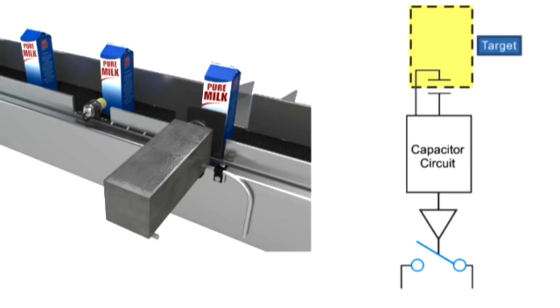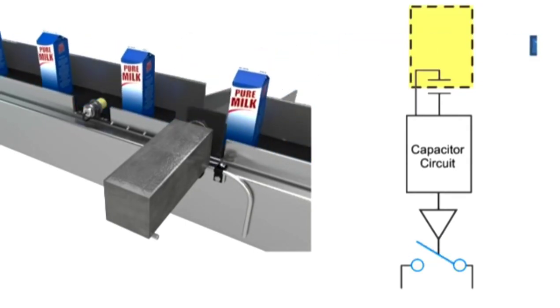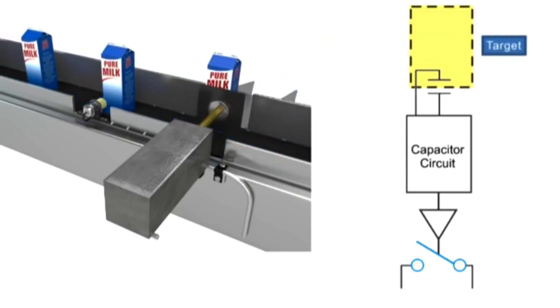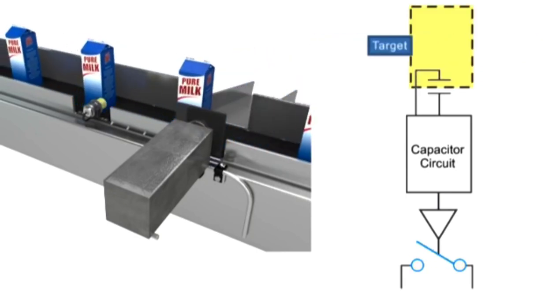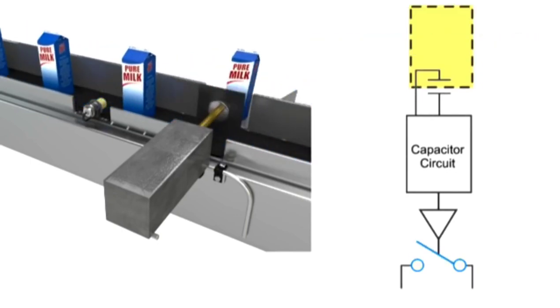In this example, if liquid is detected in the milk carton, the pusher device allows the milk to pass through. If no contents are detected, the pusher device rejects it and sends it to a different location.